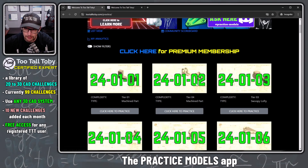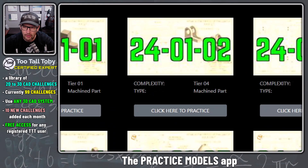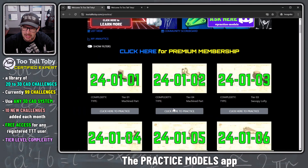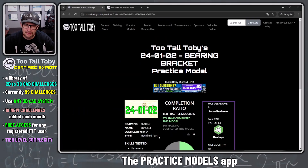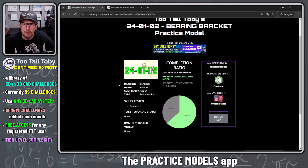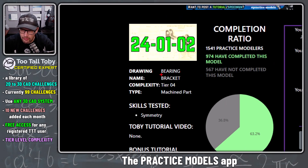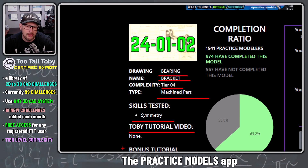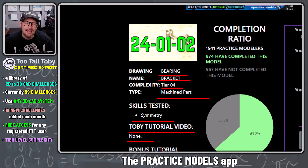Let's go to challenge 24-01-02, which has a tier four complexity and is a machined part. I click 'here to practice' and I'm presented with new information: the drawing name is 'Bearing Bracket,' it's a tier four machined part, and the skills tested include symmetry. Over time, tutorial videos will be filled in for each challenge, so if you get stuck there should be a tutorial waiting for you.